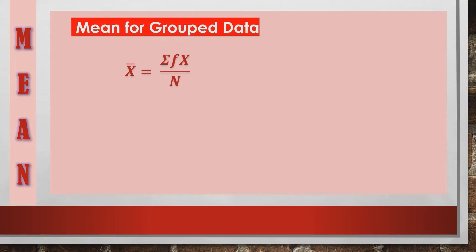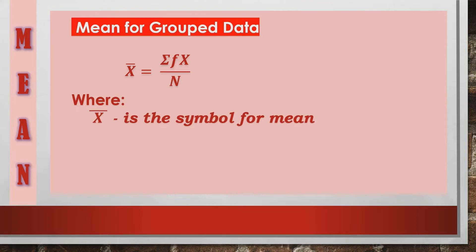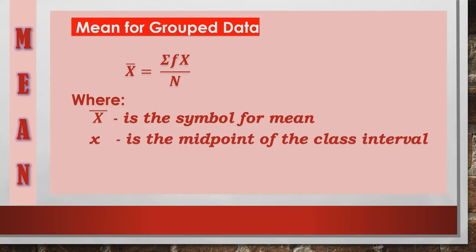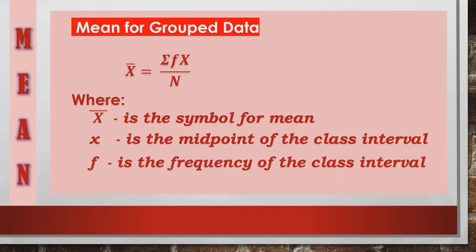Now let's look at how to calculate the mean for grouped data. We will use this formula: mean equals the summation of fx over n. In this formula, x-bar is the symbol for mean; x is the midpoint of the class interval; f is the frequency of the class interval; and n is the total frequency.